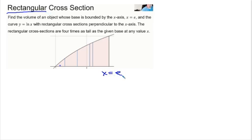And the curve, y equals the natural log of x. So that means this value right here has got to be 1, with rectangular cross sections perpendicular to the x-axis. The rectangular cross sections are 4 times as tall as the given base at any value x. So let's see how that shakes out.